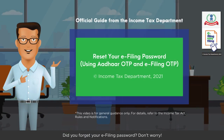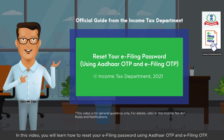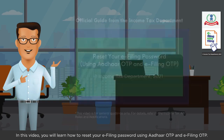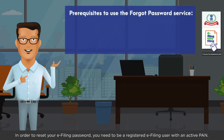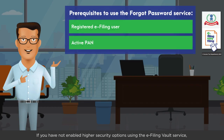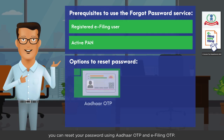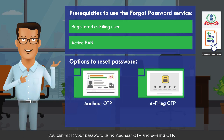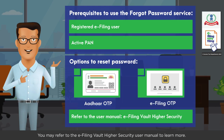Did you forget your e-filing password? Don't worry — in this video you will learn how to reset your e-filing password using Aadhaar OTP and e-filing OTP. In order to reset your e-filing password, you need to be a registered e-filing user with an active PAN. If you have not enabled higher security options using the e-filing vault service, you can reset your password using Aadhaar OTP and e-filing OTP. You may refer to the e-filing vault higher security user manual to learn more.